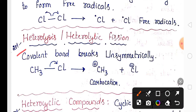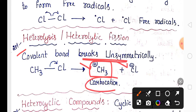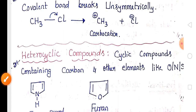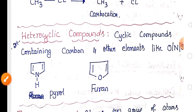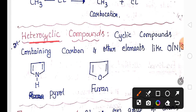In heterolysis, the covalent bond breaks unsymmetrically to form positive and negative charged species. If you find a carbon with a positive charge, it is called a carbocation. The hybridization of a carbocation is sp2 and its structure is planar.